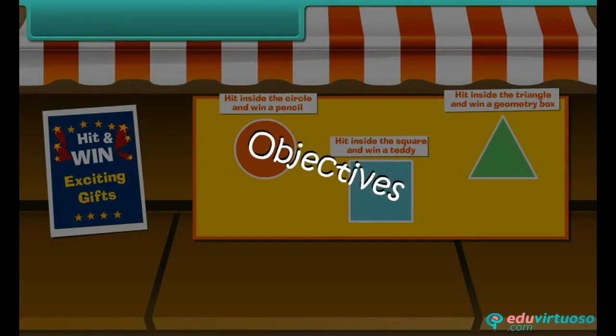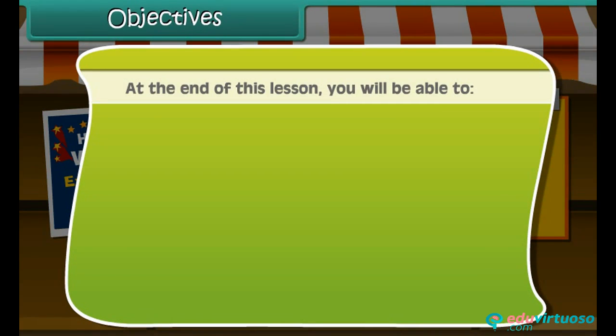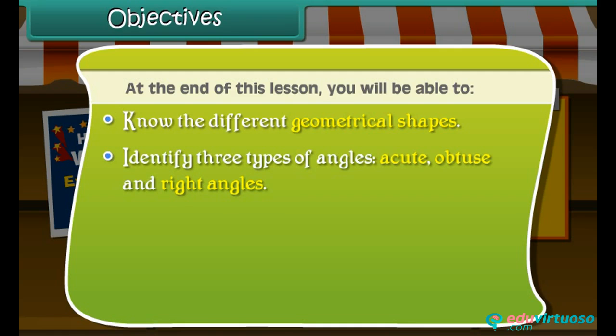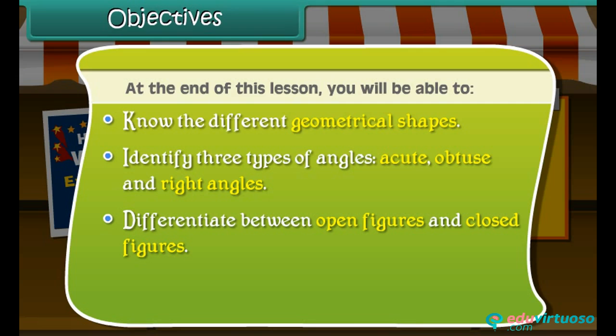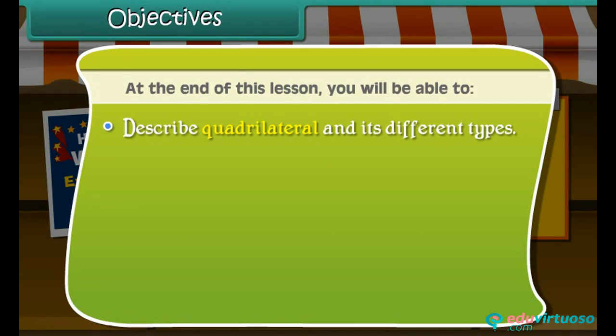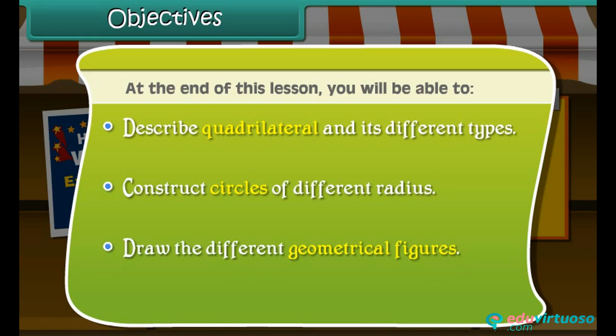Objectives. At the end of this lesson, you'll be able to know the different geometrical shapes, identify three types of angles: acute, obtuse and right angles, differentiate between open figures and closed figures, explain triangle and its types, describe quadrilateral and its different types, construct circles of different radius, and draw the different geometrical figures.